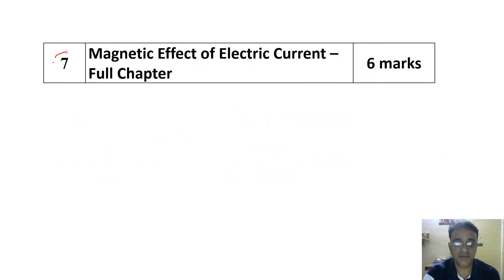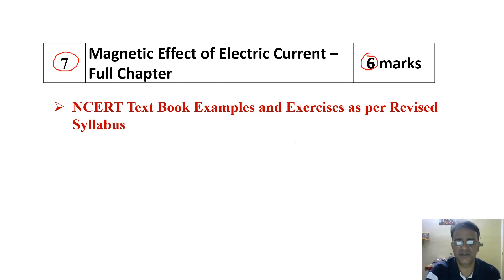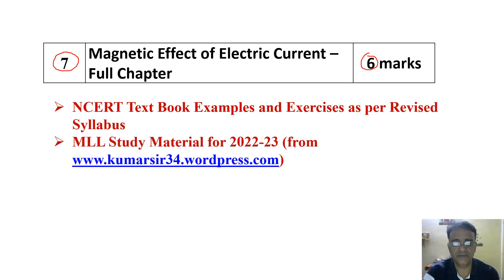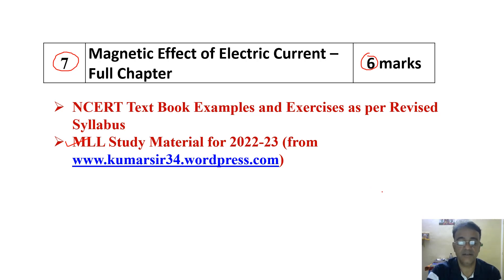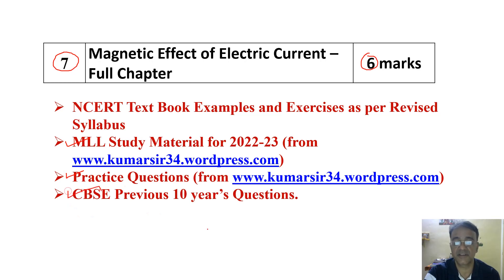The last chapter is Magnetic Effect of Electric Current, worth 6 marks — full chapter. Students have to complete all NCERT textbook examples and exercises as per the revised syllabus. Note that some topics have been deleted from this chapter. Then minimum level learning study material, practice questions, and CBSE previous 10 years questions.